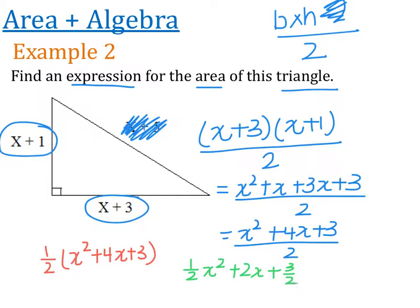So what I did there is I expanded the 1 half across the entire bracket. And if you don't like fractions, you can also write it as decimals. So 0.5x squared plus 2x plus 1.5. Okay? All of those are absolutely, totally acceptable ways to write your answer. Alright?